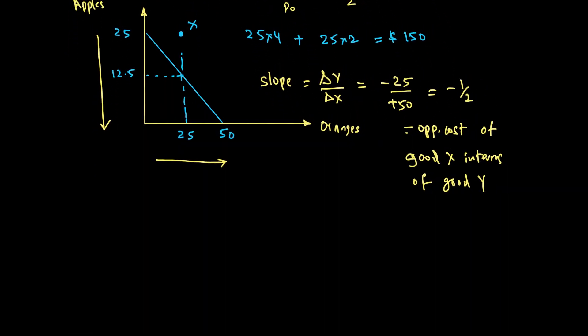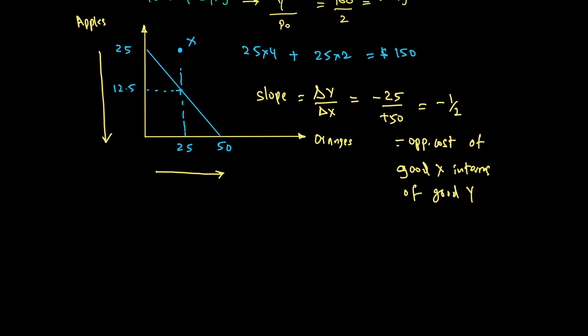A useful way to look at our opportunity cost or slope is to represent it in terms of prices. If I go back to our calculation, 50 was simply Y over PO, and 25 was simply Y over PA. Because price of apple was $4, 100 over 4 was 25, and 100 over 2 was 50.